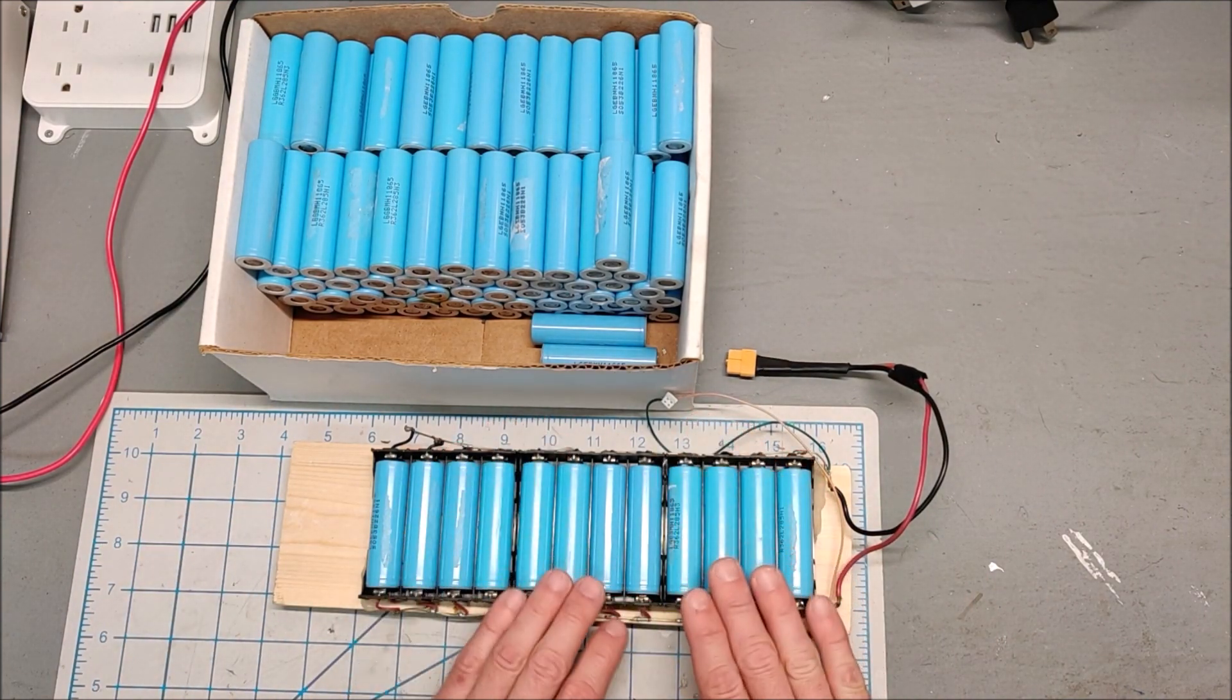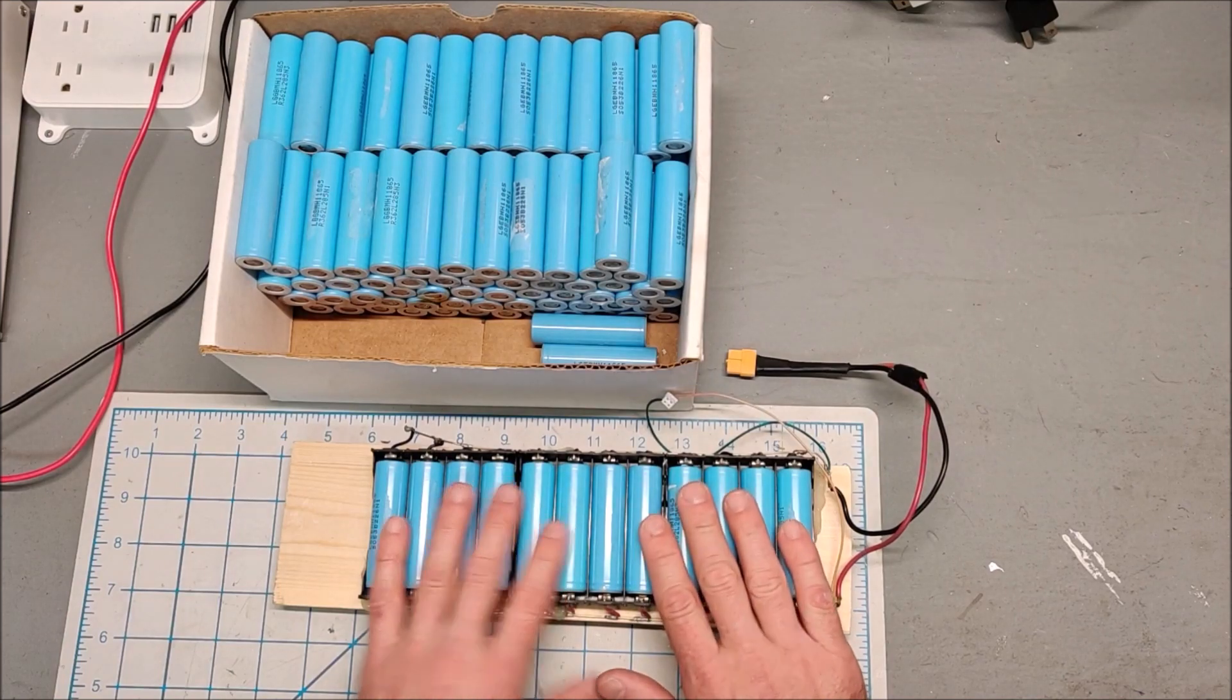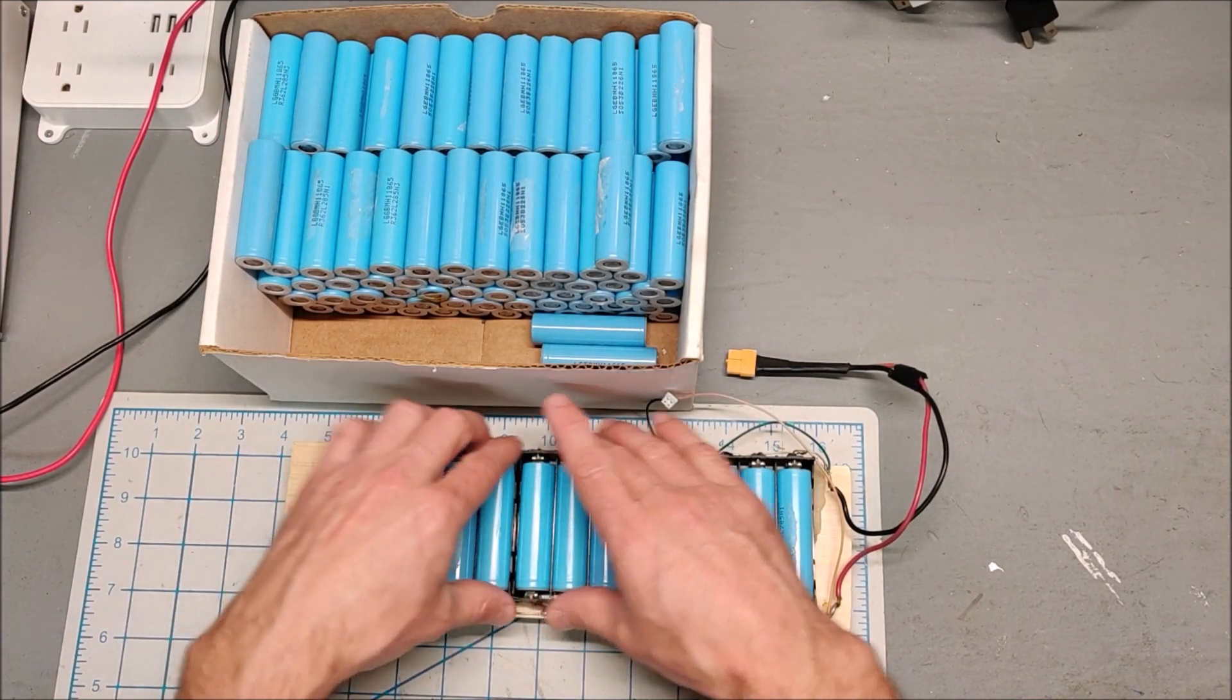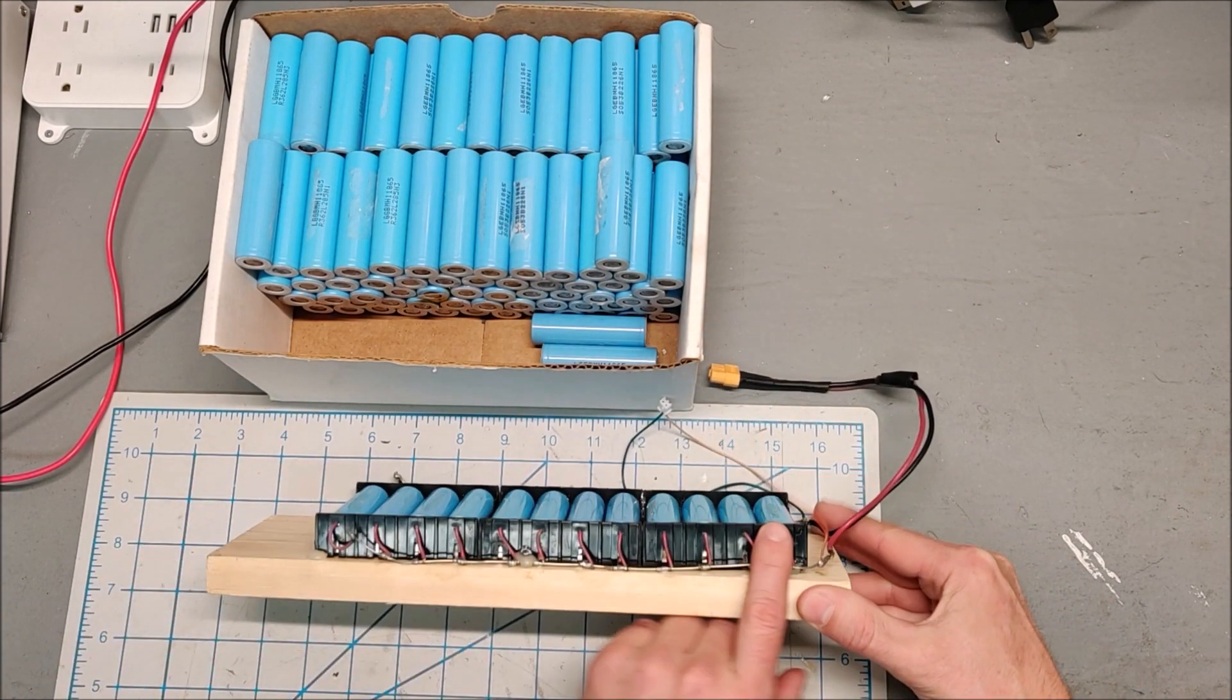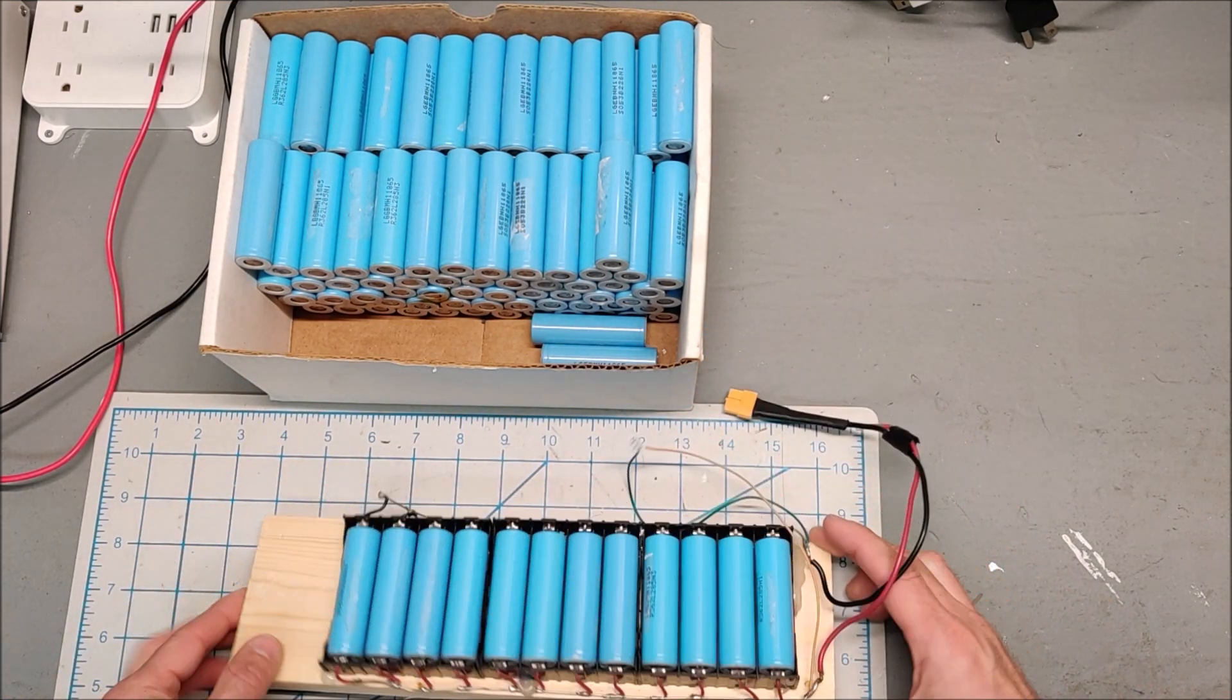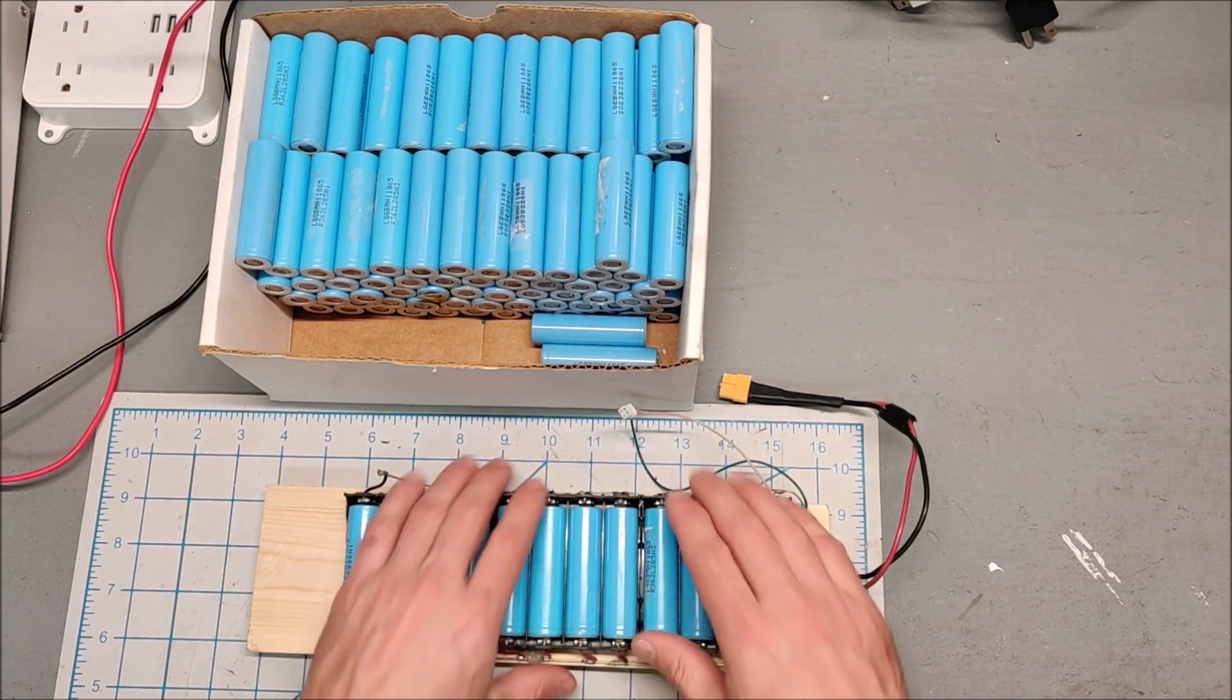So there's a couple ways to do it. One way is to build something like this, and I use this a lot. These are four cell holders that are wired all in parallel. And I just put in a bunch of cells in here, in parallel.